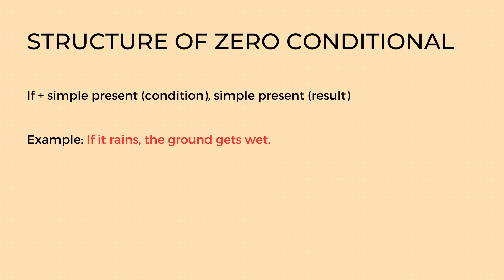The structure of the zero conditional is quite simple. We start with the word 'if,' followed by the simple present tense that describes the condition, and then we have the simple present tense that describes the result. For example, if it rains, the ground gets wet.